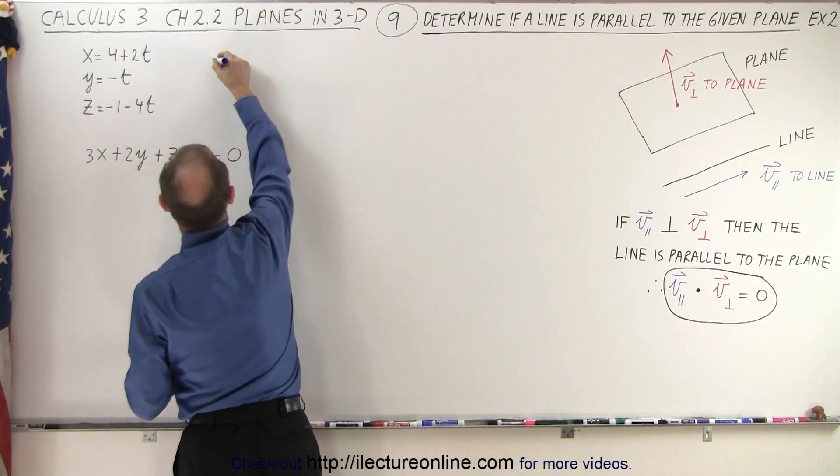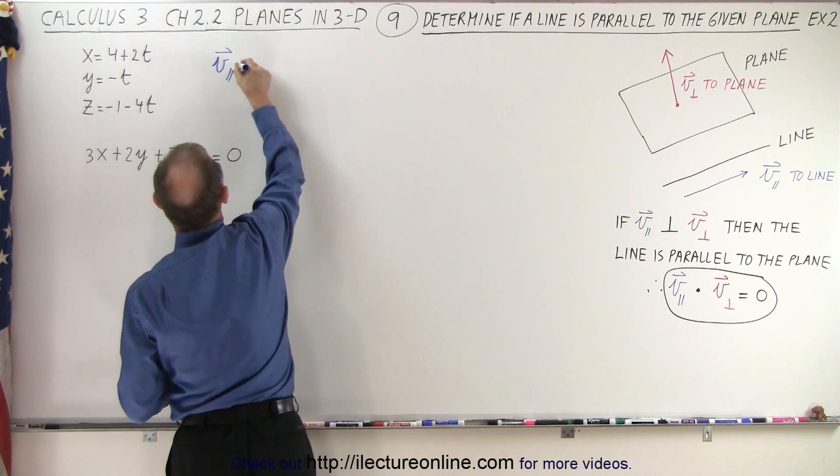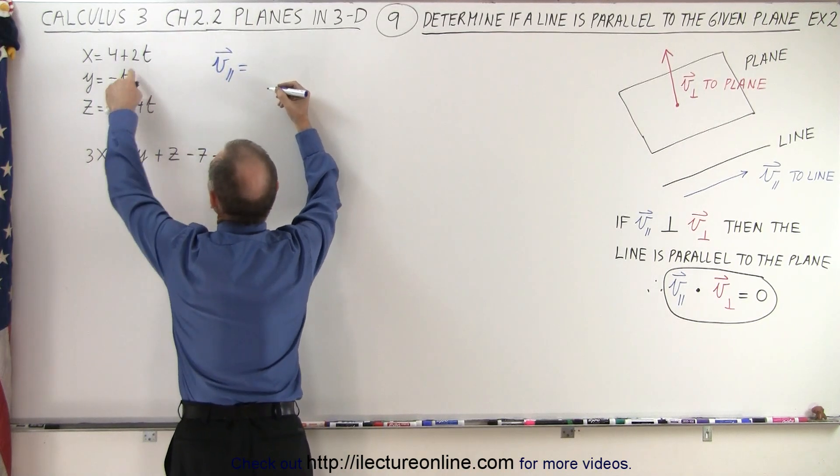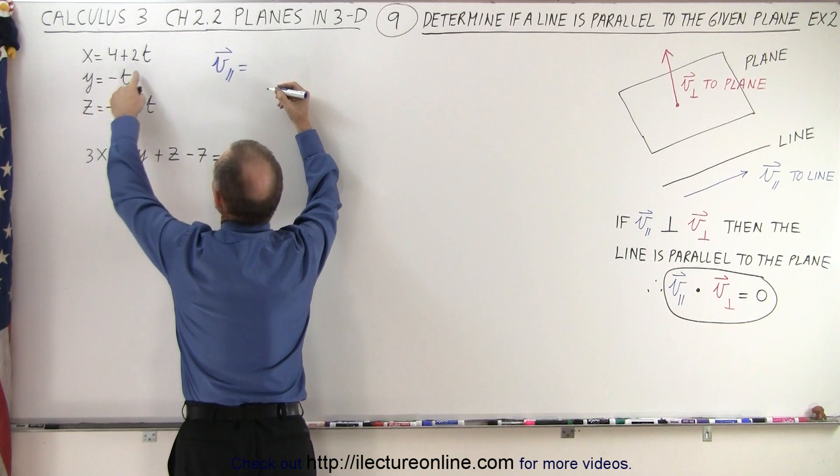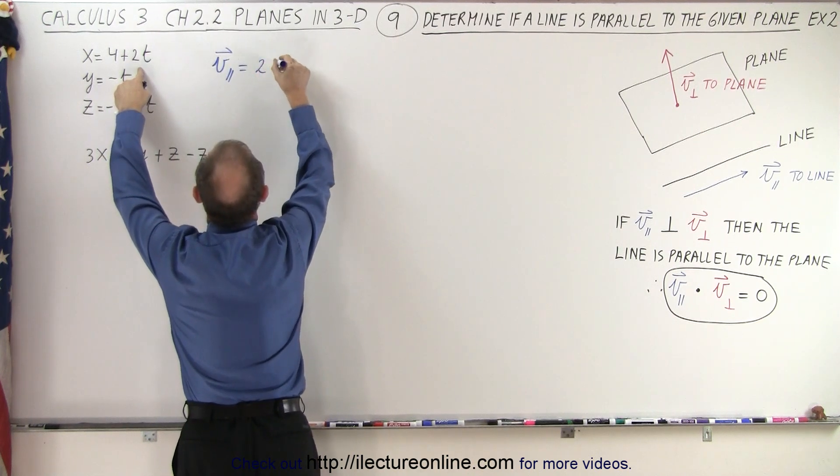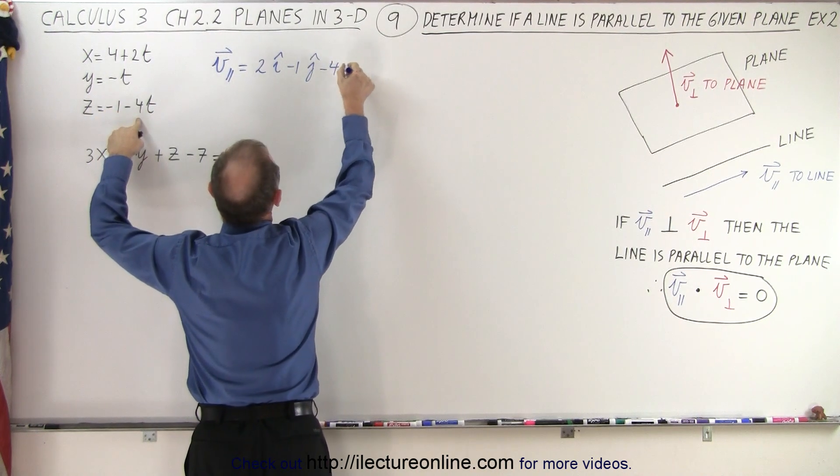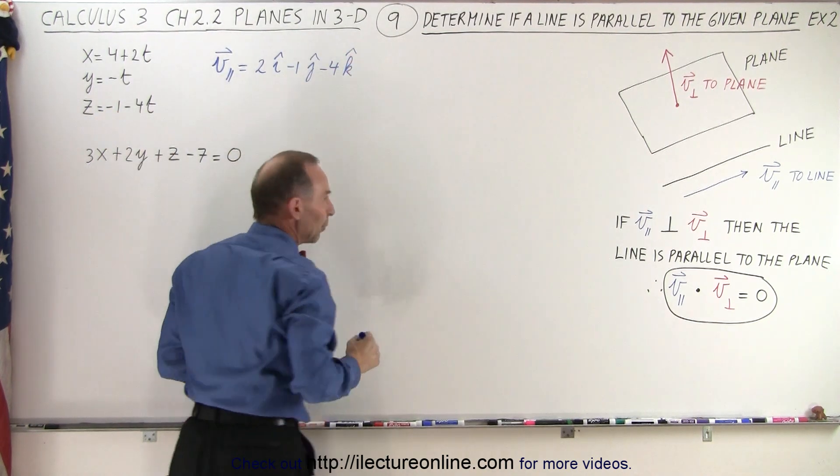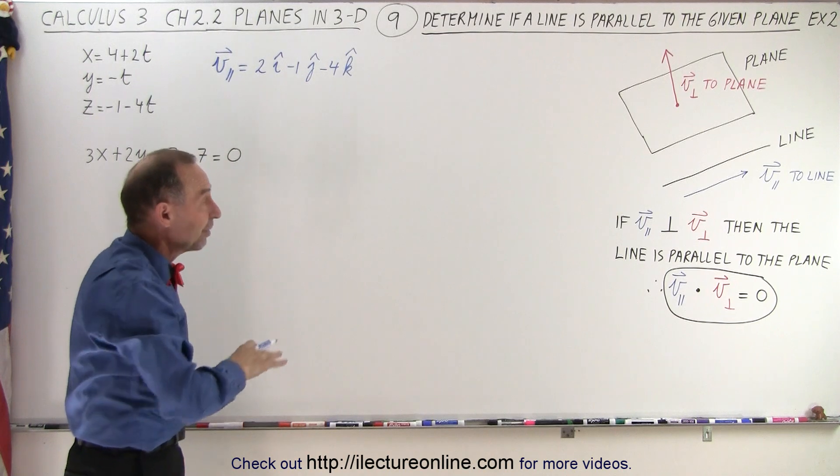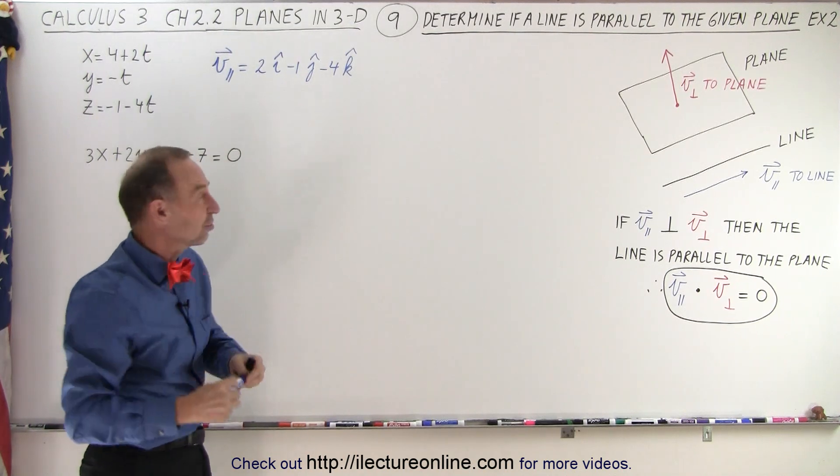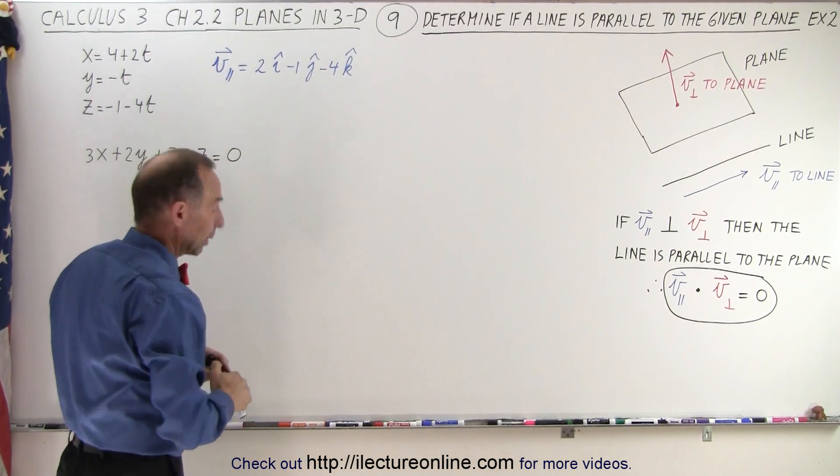We can say that the vector that's parallel to the line is going to be equal to the coefficients of the parametric variable t here. That's going to be 2 in the i-direction, minus 1 in the j-direction, and minus 4 in the k-direction. I know that we converted the equations in the previous video, but as we get familiar with these equations, we can do it a little quicker like that.